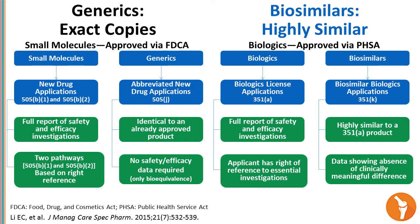For biosimilars on the right-hand side, the original biologic must go through a 351A license application with a full report on safety and efficacy. For an originator biologic, the predominant evidence comes from Phase III clinical studies. For biosimilars, it's the opposite—the predominant evidence must be in the structural and analytical data demonstrating biosimilarity, with relatively little clinical evidence required. This is by design: to get biosimilars to market efficiently and at lower cost if they are highly similar to the originator.